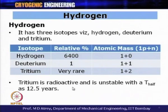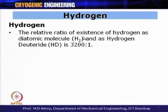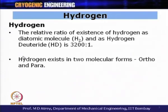When dealing with tritium, one must be very careful about its radioactivity and take all necessary precautions. Normally, hydrogen and sometimes deuterium (as heavy water) are used commercially. The relative ratio of existence of H₂ to hydrogen deuteride (HD) is 3200 to 1. Importantly, hydrogen exists in two molecular forms: ortho and para, which will be discussed in detail.